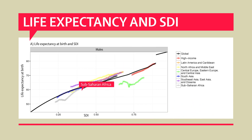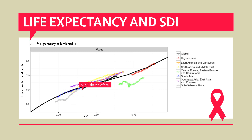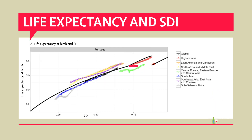In Sub-Saharan Africa, the dip in life expectancy is mostly due to HIV. For Central Europe, the cause is alcohol-related deaths.